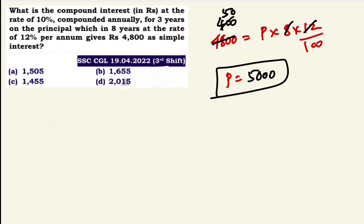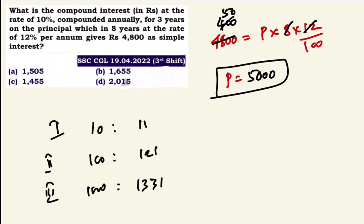Principal is Rs.5,000. Now for 10% compounded annually for 3 years, the ratio is 10:11 per year. First year 100 to 121, third year 1000 to 1331. So compound interest portion is 331. For 1000 is 5000, CI = Rs.3,300.